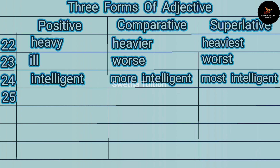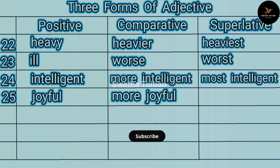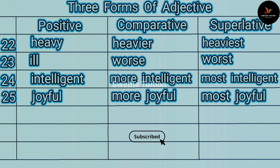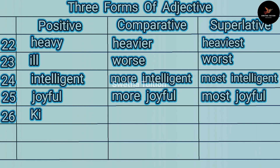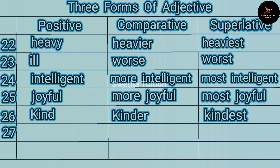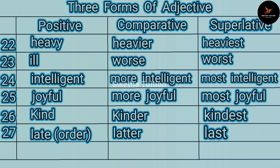Number twenty-four: intelligent, more intelligent, most intelligent. Number twenty-five: joyful, more joyful, most joyful. Number twenty-six: kind, kinder, kindest. Number twenty-seven: late (for order) later, last.